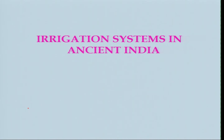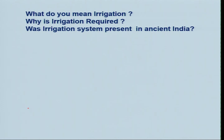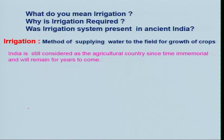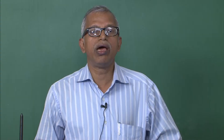Let us now talk about the irrigation system in ancient India. Irrigation is basically a method of supplying water to the field for the growth of crops. I consider agriculture and crops as the primary wealth, while the rest are secondary wealth. Unfortunately, the entire world including India is running after secondary wealth. But India is still considered an agricultural country since time immemorial and will remain so, because India is a populous country and food is essential.